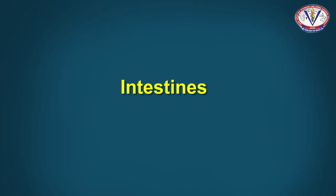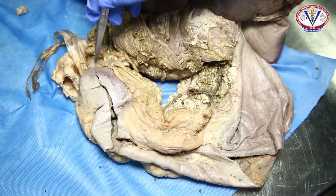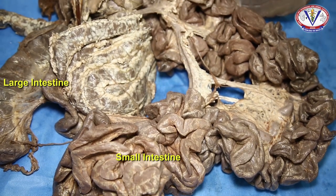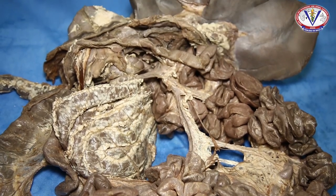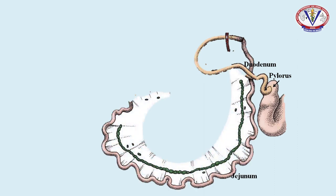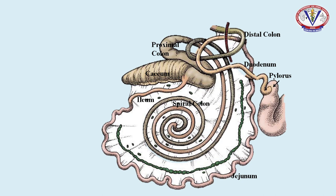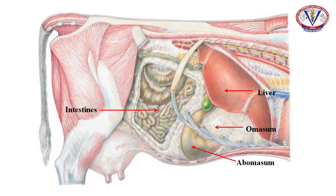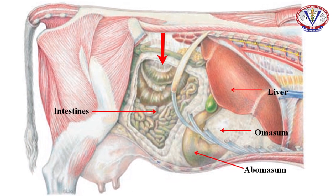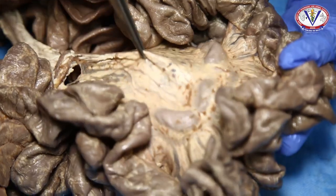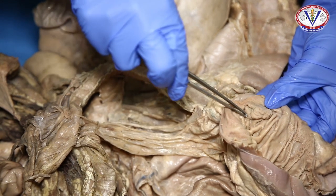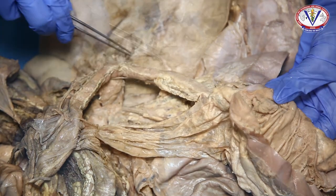The intestines extend from the pylorus of the stomach to the anus and are divided into small and large intestines. The small intestine is further subdivided into duodenum, jejunum, and ileum. The large intestine comprises cecum, colon, and rectum. The anal canal is the short terminal part of the digestive tract. The intestines are confined to the right part of the abdominal cavity, suspended from the roof by a common peritoneal fold called the mesentery, in contact with the right face of the rumen and caudal to the omasum. The small intestine starts from the pylorus and terminates at the ileocecal opening.